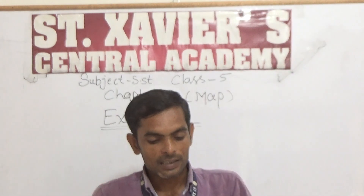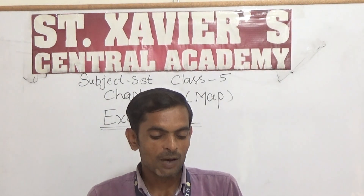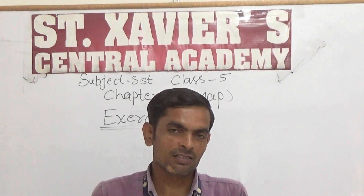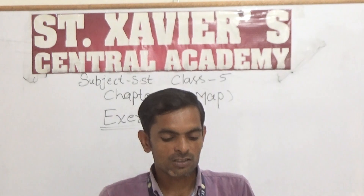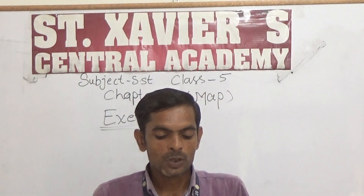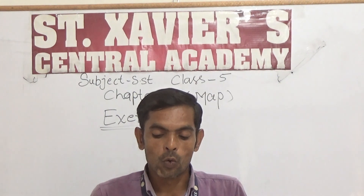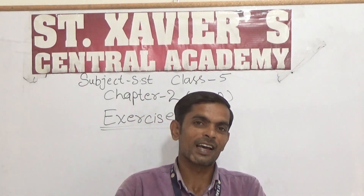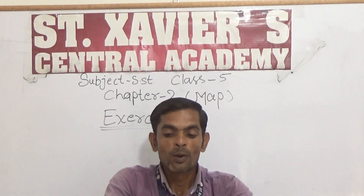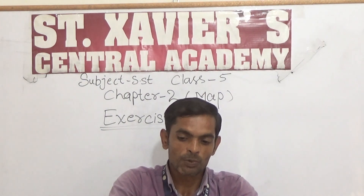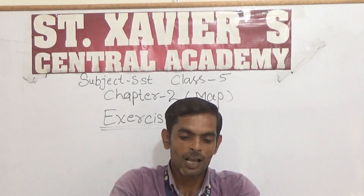Number three: there are six sub-directions — this sentence is correct. Number four: on a map, various scenes and objects are shown by symbols and signs — this sentence is absolutely correct.